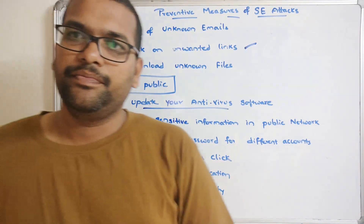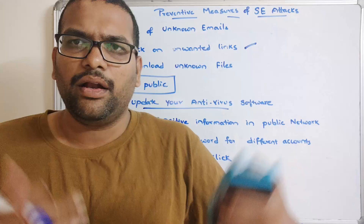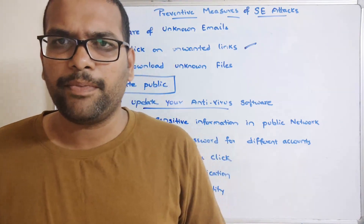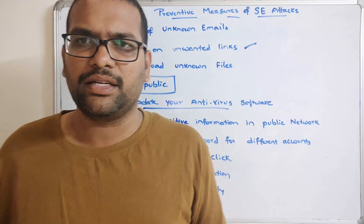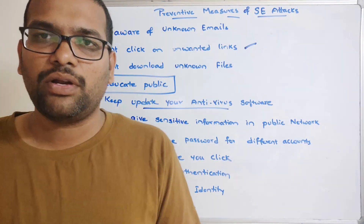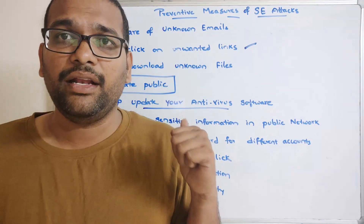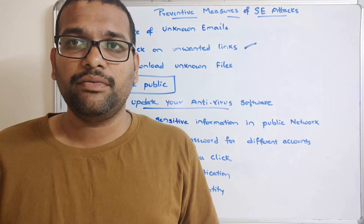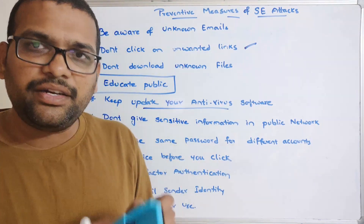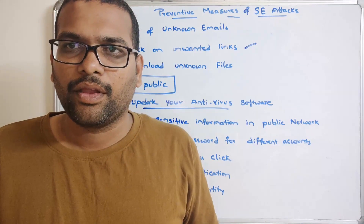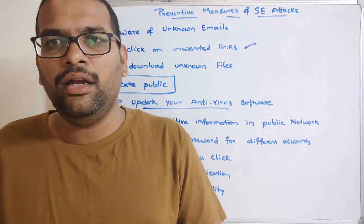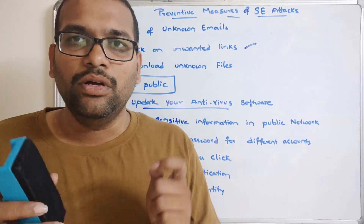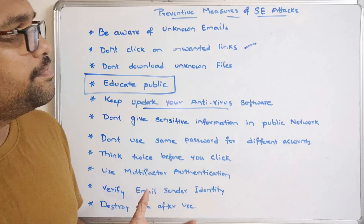Destroy your data after use. In our regular daily work we write contact numbers, email IDs, receipt numbers, etc. on paper or notepad. Once the work is completed, just destroy that information. We discussed one type of social engineering attack called dumpster diving — getting information from the trash. So destroy everything after use and don't disclose any of your information to potential attackers.